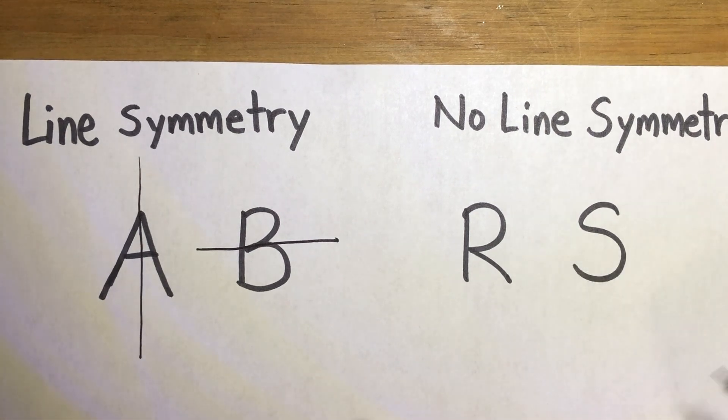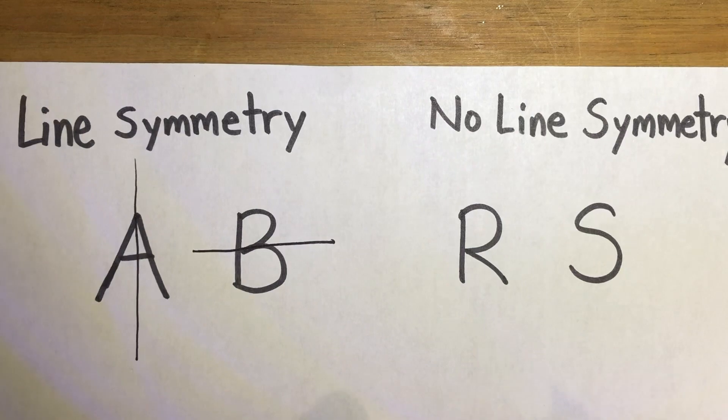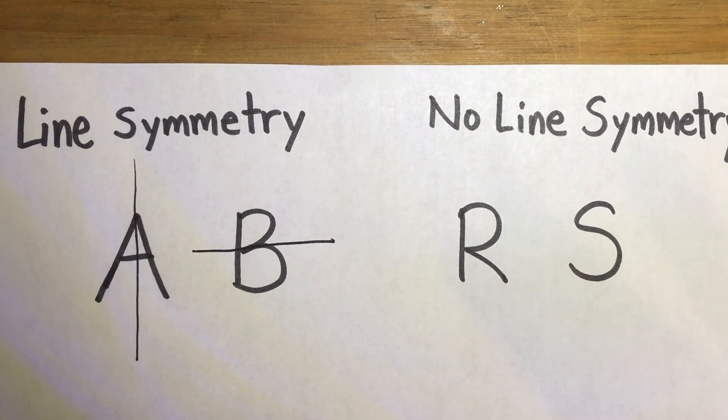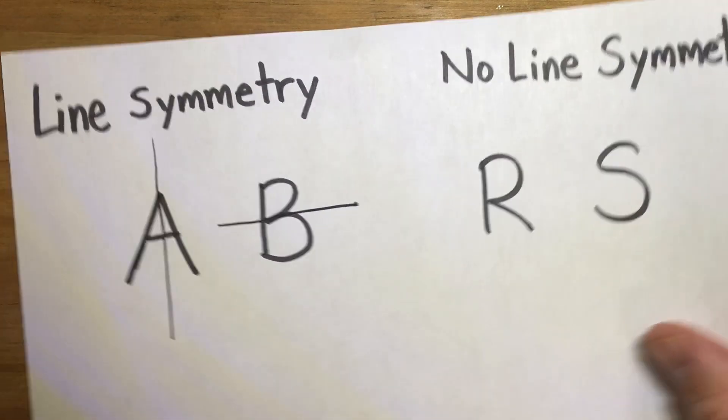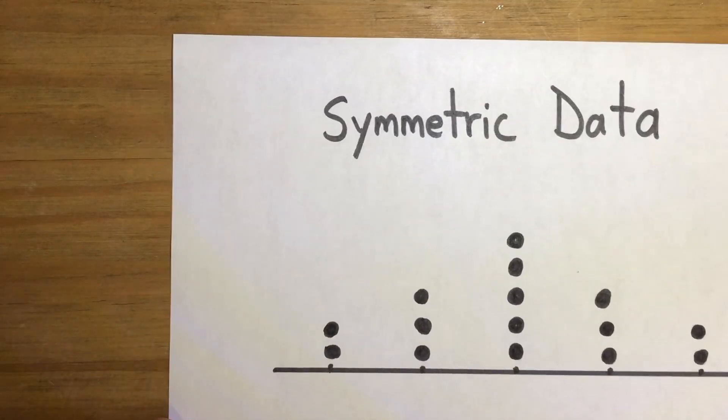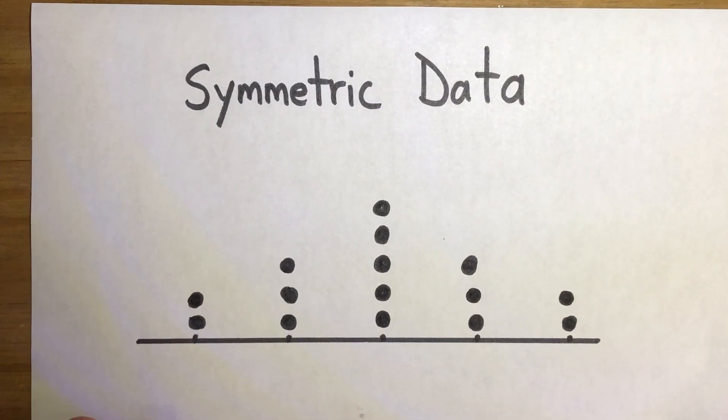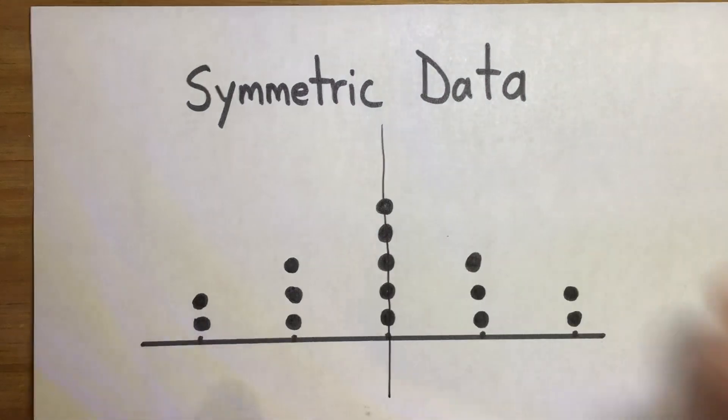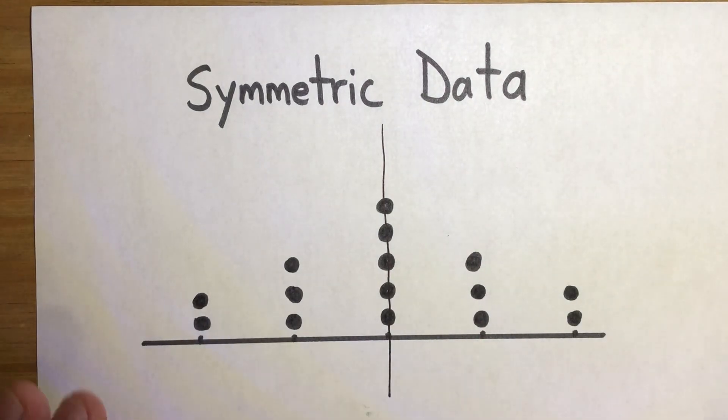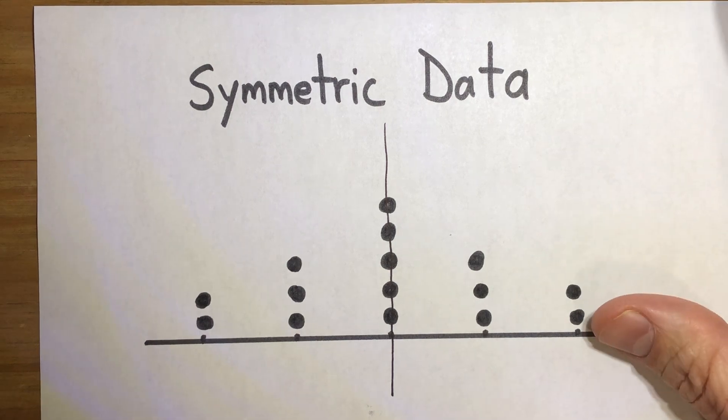Now, this has no line symmetry. No matter where you draw a line, it's not going to look the same on both sides. And so that's where we're going to get the term symmetric. So here's an example of data that is symmetric. You can see I can draw that line right down the middle, and it is the same on the left as it is on the right. So that data is symmetric and should be pretty easy for us to identify.